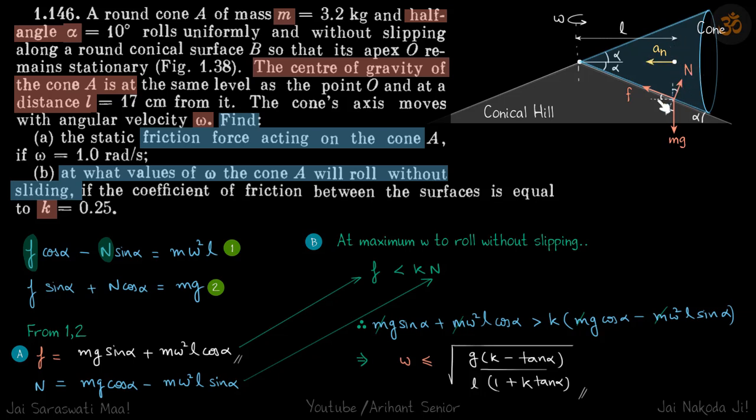So we'll resolve the forces. The forces are: frictional force, because this cone has a tendency to slide down, so frictional force will be upwards. Then there will be normal force that is of course perpendicular to the lateral surface of the hill, so it will be in this direction. And then we have mg downwards. By geometry you can see that all these angles are also alpha.